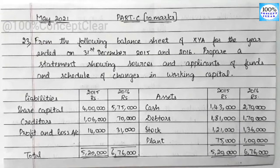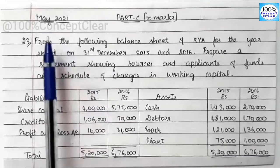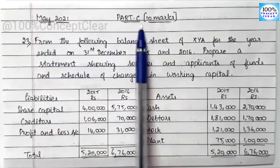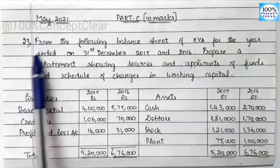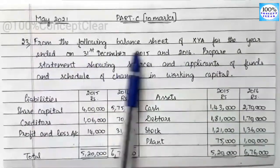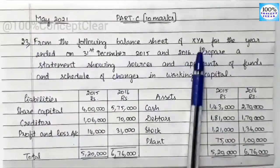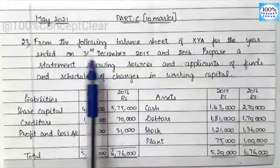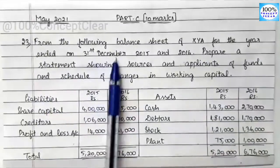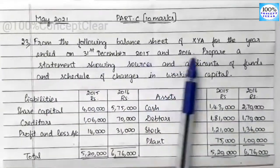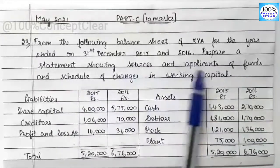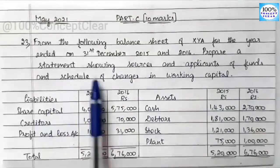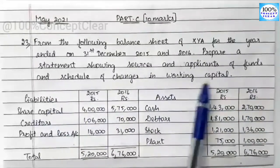In this video, we will discuss the Accounting for Managers subject, May 2021, question number 5C, 10 marks. The question is from the balance sheet of XYA for the year ended 31st December 2015 and 2016. We need to prepare a statement showing sources and applications of fund and schedule of changes in working capital.